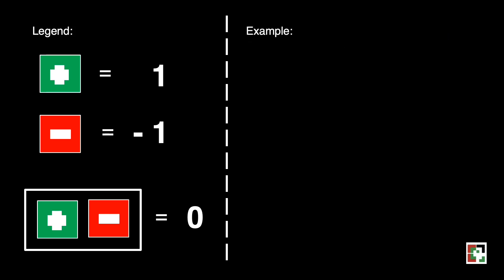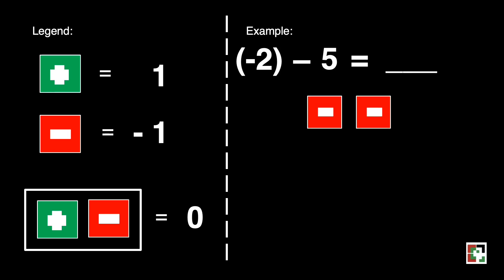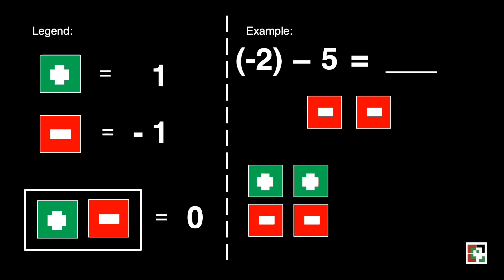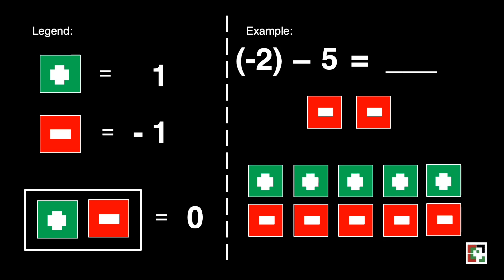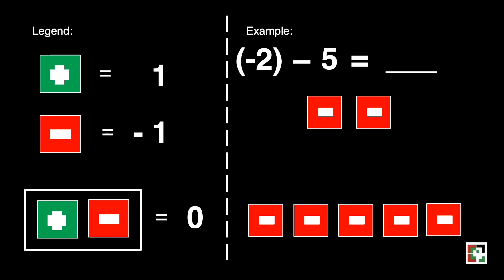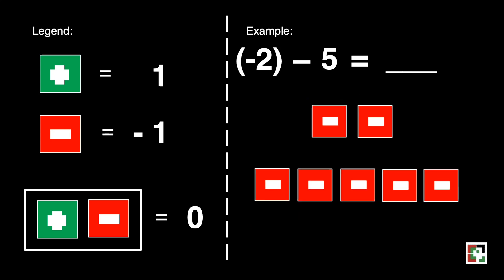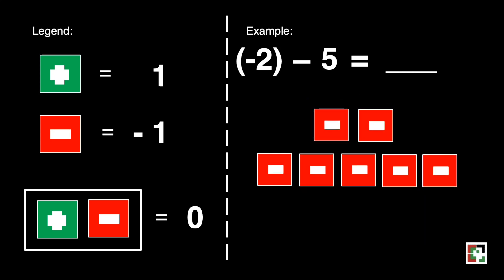Let's have the last one. Negative 2 minus 5 is equal to blank. Negative 2 is represented by 2 red squares, while our subtrahend is telling us how many zero pairs we'll use — we'll have 5: 1, 2, 3, 4, and 5. Since our subtrahend is a positive, we'll remove 5 green squares. The result is 7 red squares, and that is our final answer.